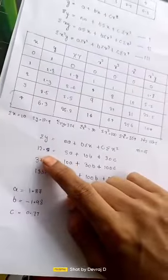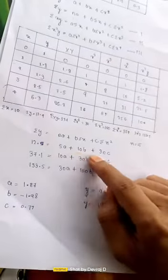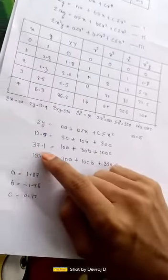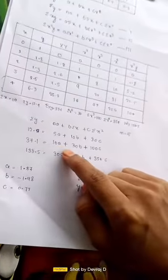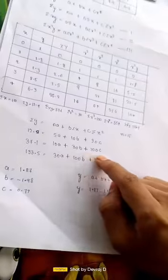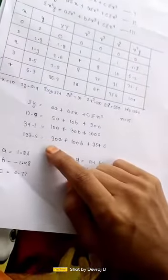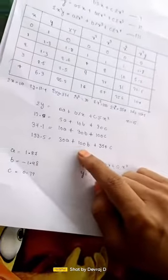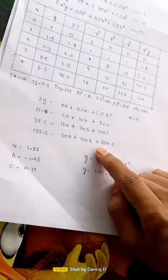The final equations are: 12.9 equal to 5a plus 10b plus 30c; 37.1 equal to 10a plus 30b plus 100c; and 133.5 equal to 30a plus 100b plus 354c.